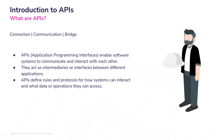API, or Application Programming Interface, is a term you may have come across in discussions about technology and software development. While APIs are often seen as technical jargon, they play a crucial role in shaping the digital landscape and can significantly impact businesses. In simple terms, APIs enable different software systems to communicate and interact with each other, creating opportunities for innovation, efficiency, and growth.